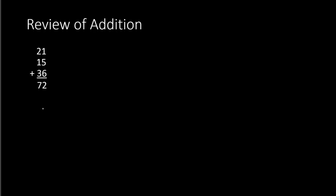Now that you've seen one example, see if you can try the second example on your own — pause the video if you need to. Here we're adding 51, 12, and 63. Again, we're going to start by adding the ones column: the 1, 2, and 3. 1 plus 2 plus 3 would be 6. So we write a 6 right here. Then we add the tens column: 5 plus 1 plus 6 would give you 12. So we write the number 12 in the front of 6, and your final answer would be 126.